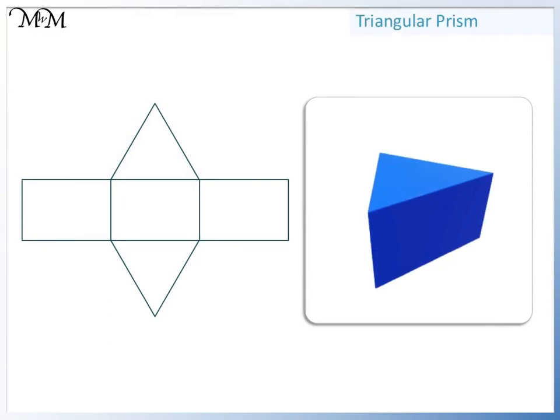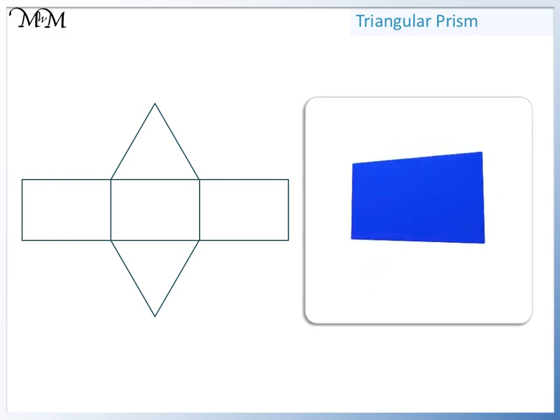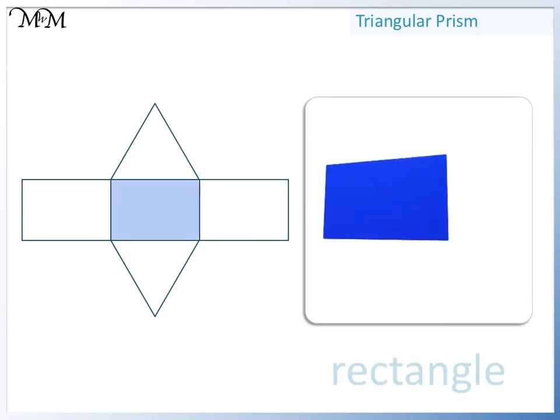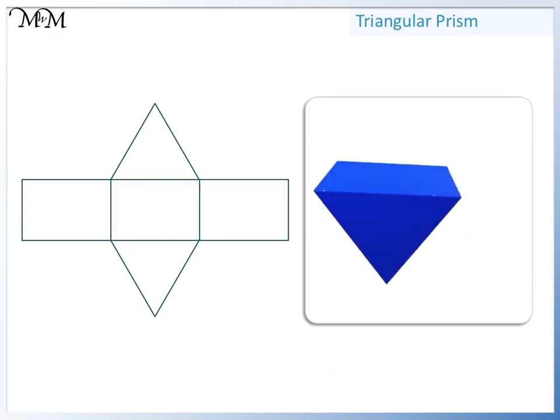Here we have a triangular prism. The 2D shapes that we can see on this prism are rectangles and triangles.